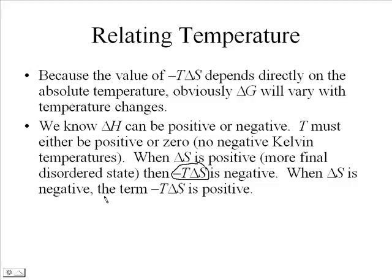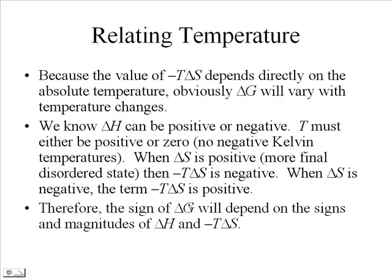When delta S is negative, you have negative of a negative entropy change, so that whole term becomes positive. That will certainly affect whether the reaction becomes more spontaneous or less spontaneous. The two things that affect whether delta G is positive or negative are the value for delta H, and the total after combining temperature with the entropy change, taking into account that negative sign.